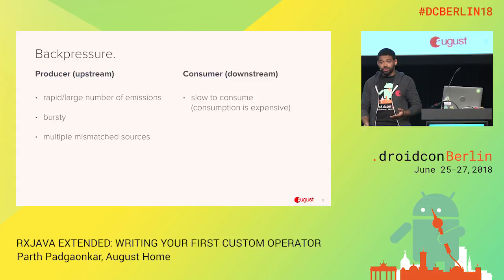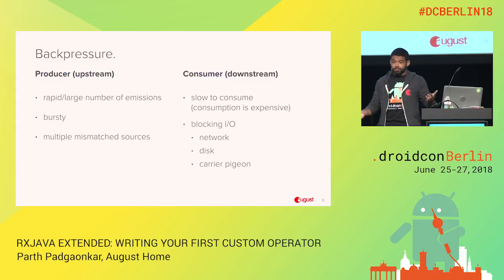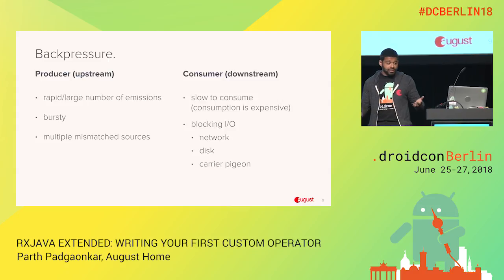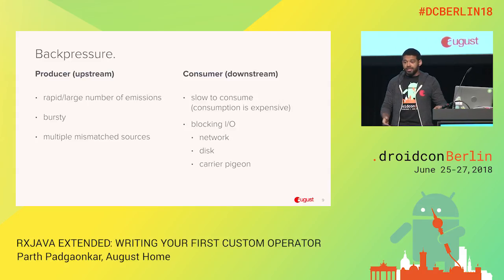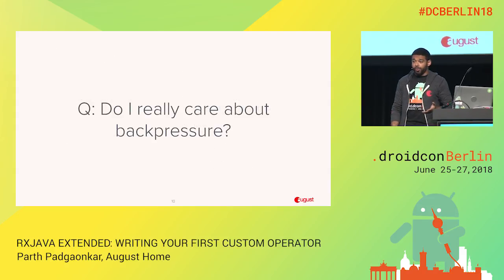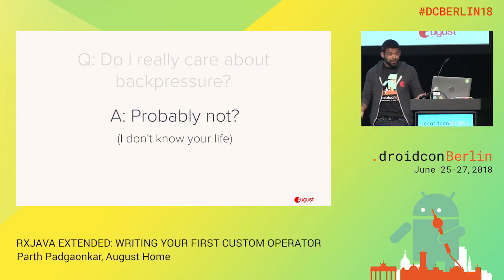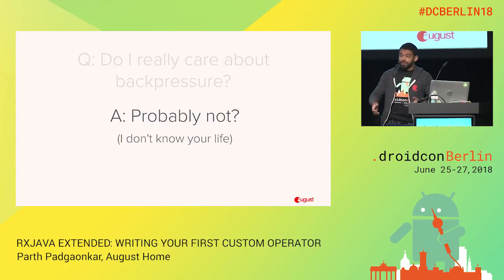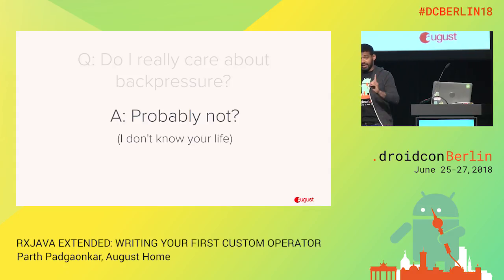The other thing that can cause backpressure is the consumer being slow to consume data. Consumption is expensive — maybe you're doing some crazy algorithms. Or plain old blocking operations need to happen, whether that's file I/O, network, or whatever. I've been using RxJava in production since 2015, and I've encountered backpressure in my code one time.